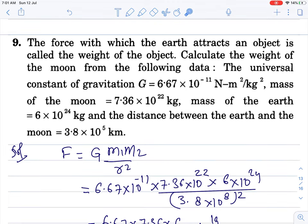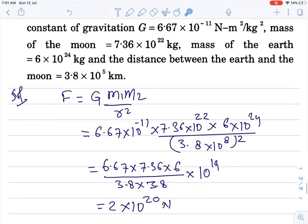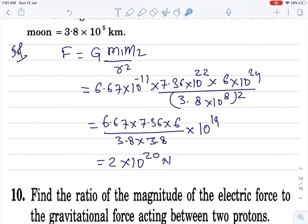The force with which earth attracts an object is called the weight of the object. Calculate the weight of the moon from the following data. Take the data, G ki value given, distance given. Gravitational force formula, we study this in 9th also. G value put ki, mass of moon put kiya, mass of earth put kiya, distance between earth and moon put kar diya, so it comes this much.